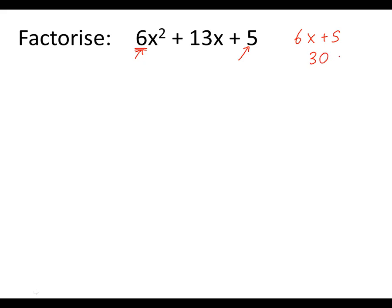And what I then want to do is I want to break 30 up into two numbers that times together to give 30 that will add up to give this middle number here, 13. So two numbers that times together to give 30 but add up to give 13 are going to be +10 and +3.